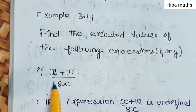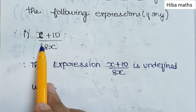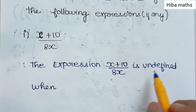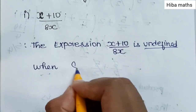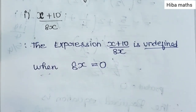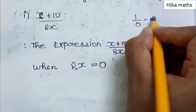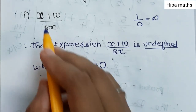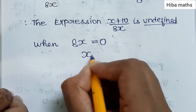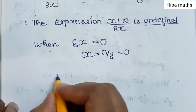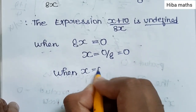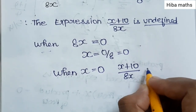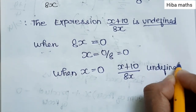First question is (x + 10) / 8x. The expression x plus 10 by 8x is undefined when the denominator is 0, because 1 by 0 is infinity — that means undefined. So if 8x is equal to 0, then x is equal to 0 by 8, which is equal to 0. So if x is equal to 0, then the expression is undefined.